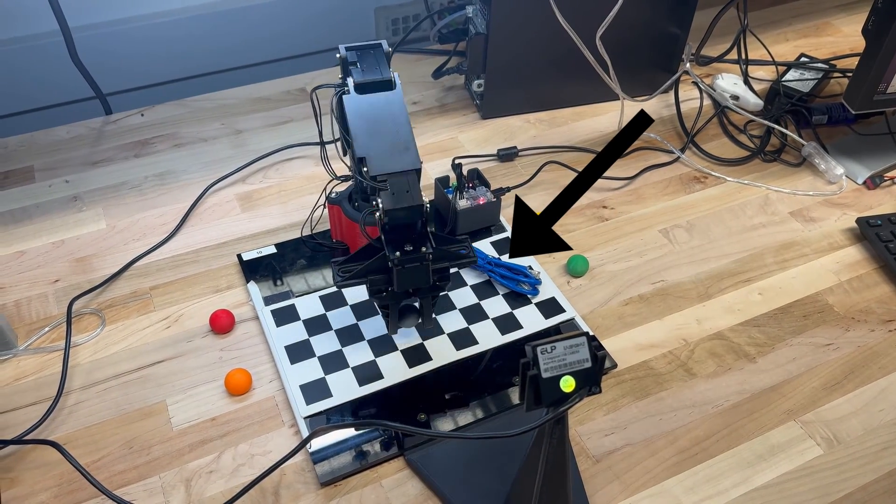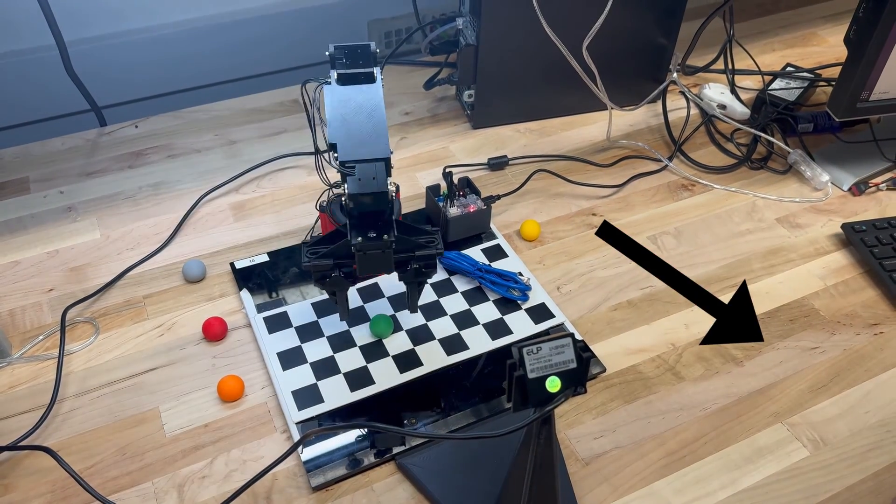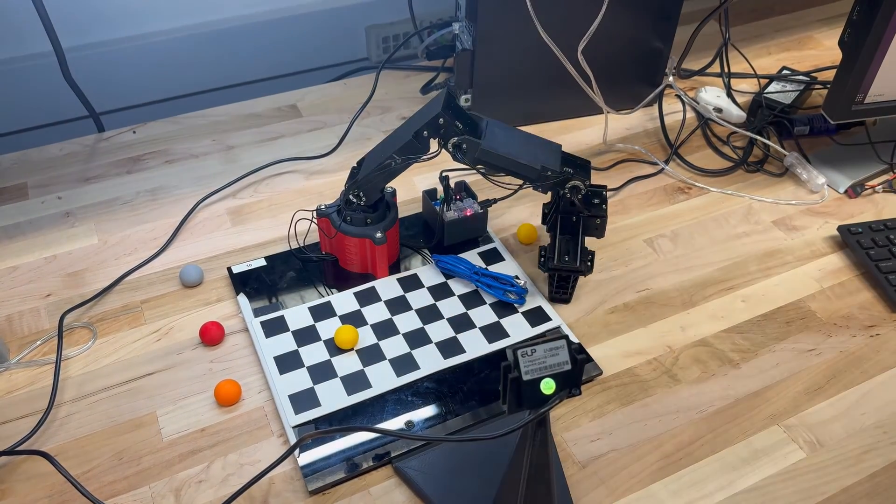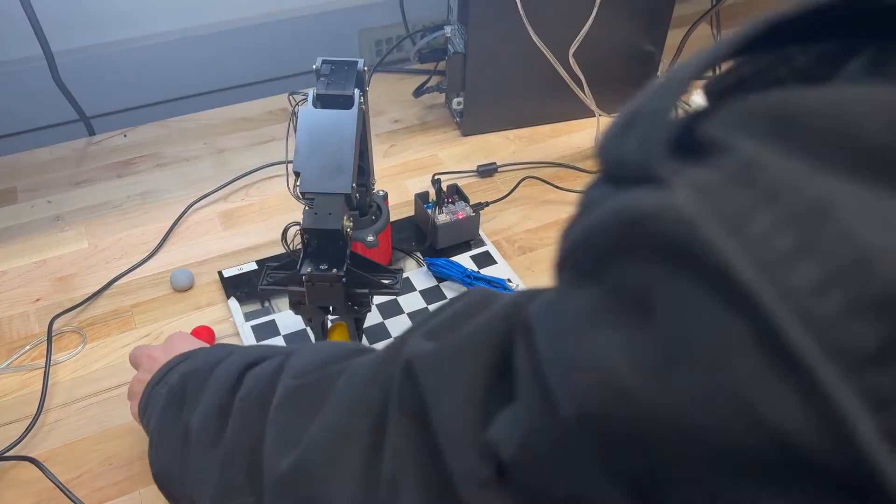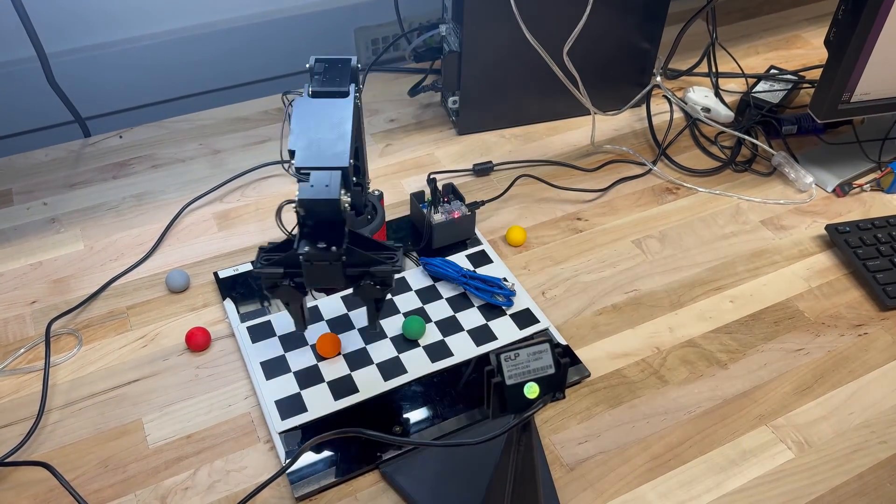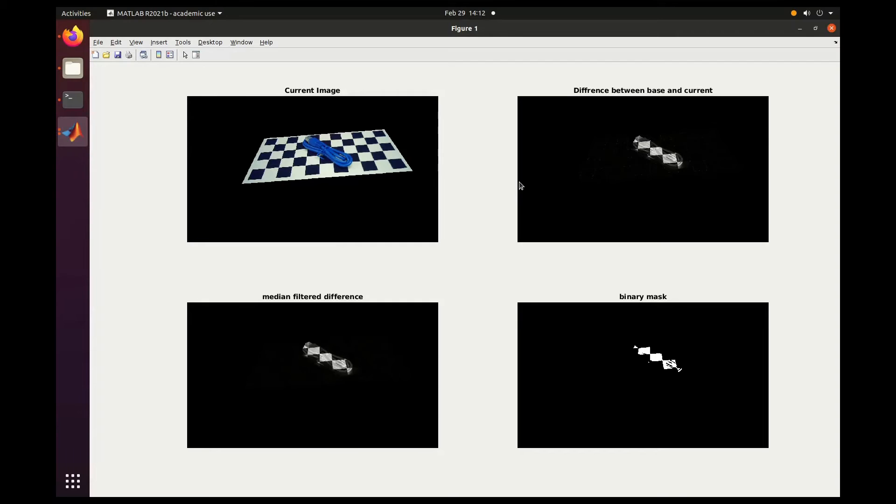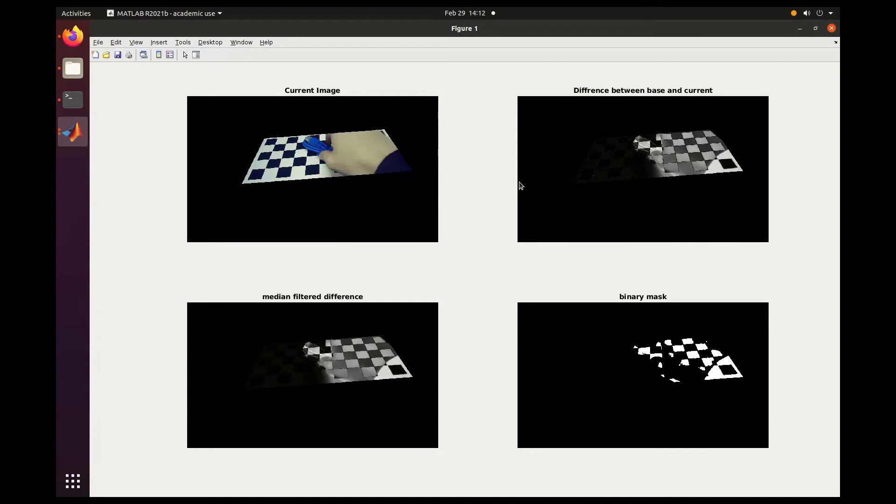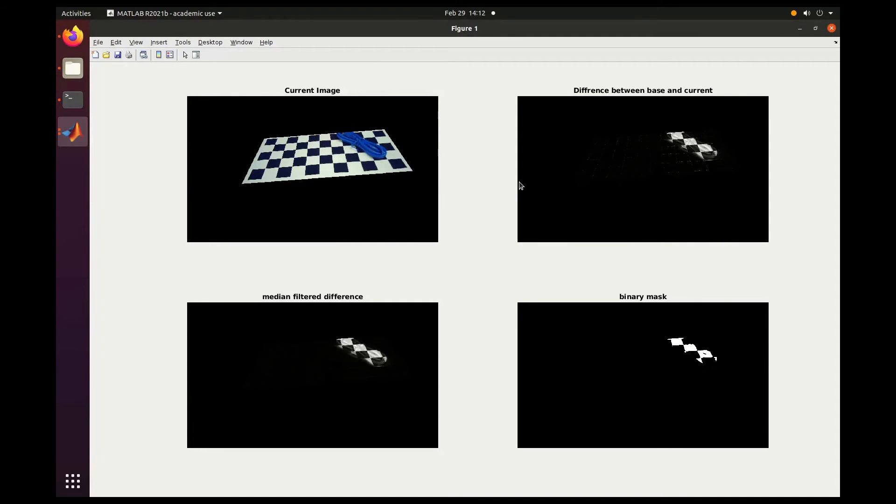But wait, what is that object doing in our workspace? And what if an operator gets in the way of the robot and is injured by the arm? To start off with our final implementations to fix these problems, this project involved object detection through an alternate image processing pipeline. First, we take an image of the current workspace and compare it to a base image of the workspace using MATLAB's imfuse function.